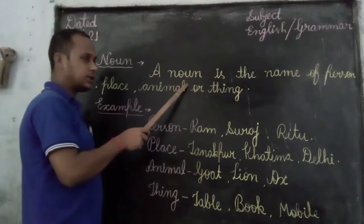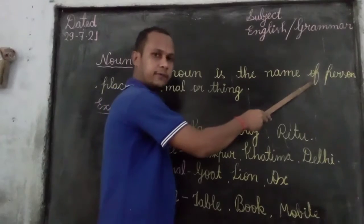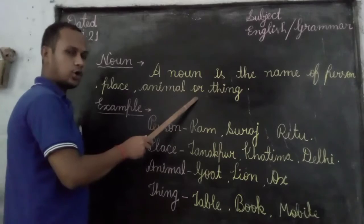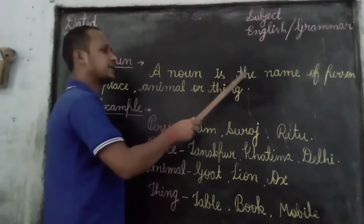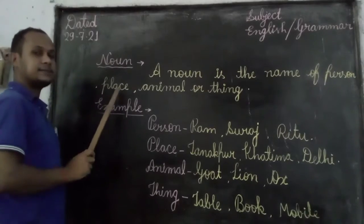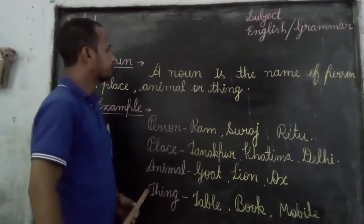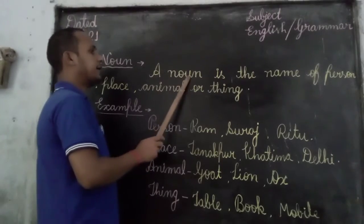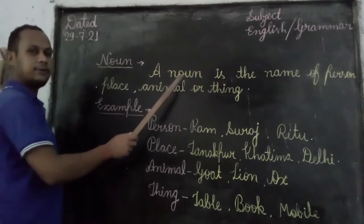A noun is the name of person, place, animal or thing. Again: a noun is the name of person, place, animal or thing. Now you have to say with me: a noun is the name of person, place, animal or thing.